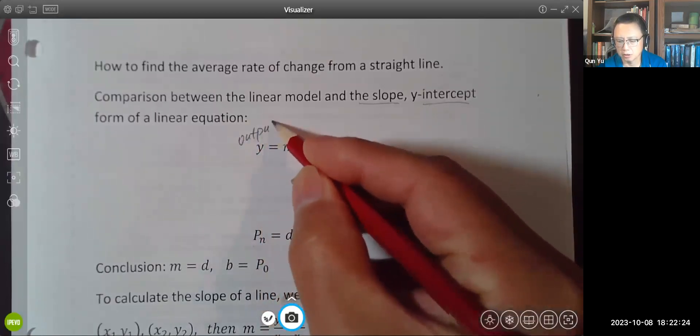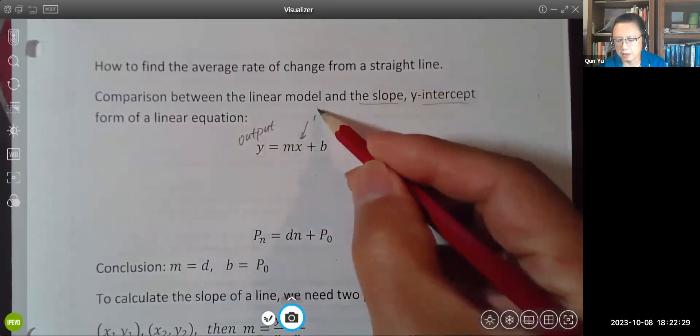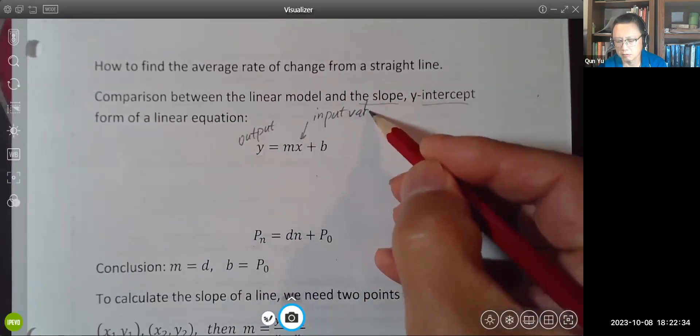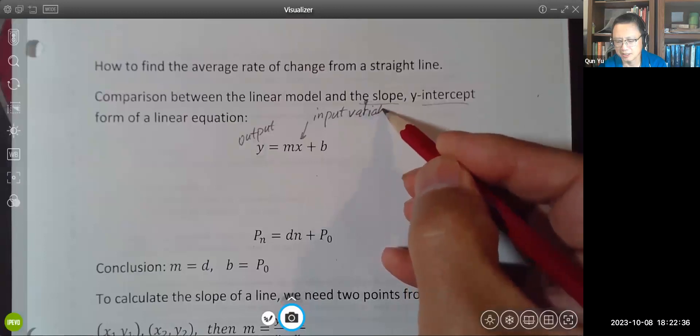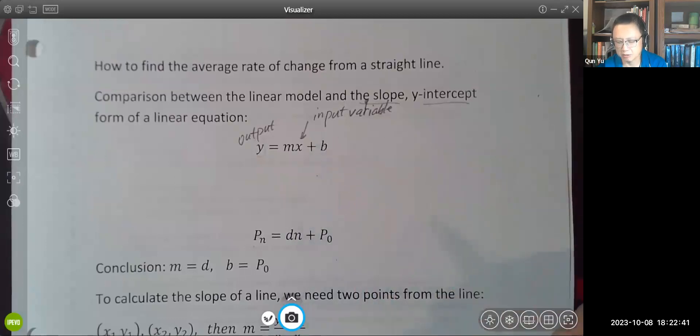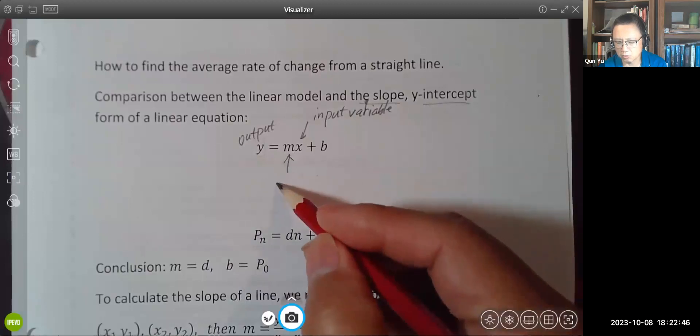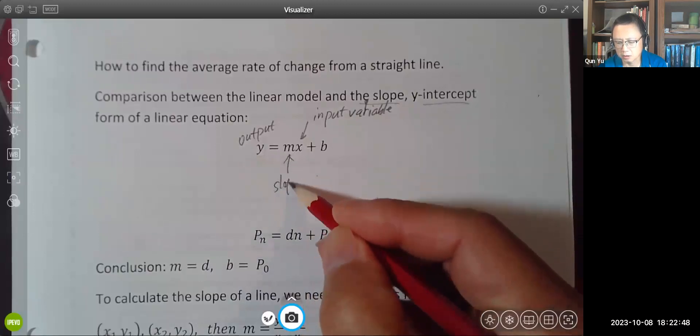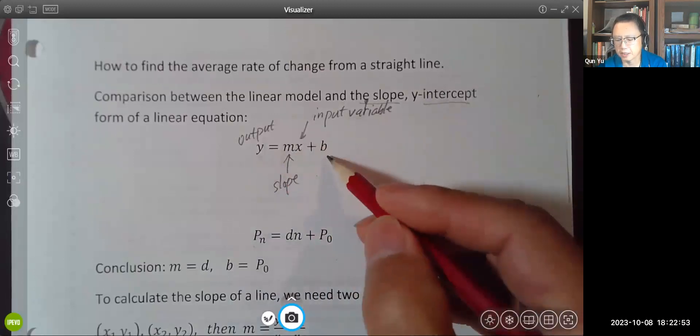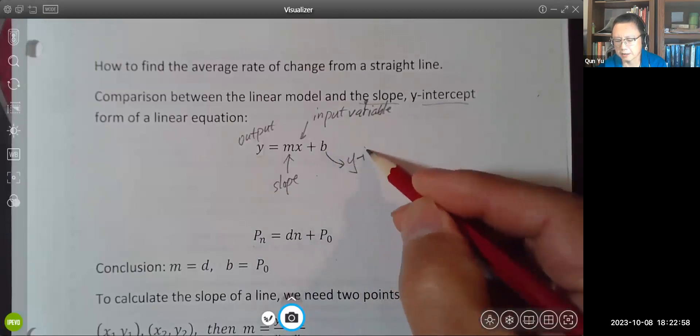We have x and everything else on the right hand side. This x is the input variable. This b is just a number in front of input variable, which is the slope of the line, and this standing alone number is called the y-intercept.